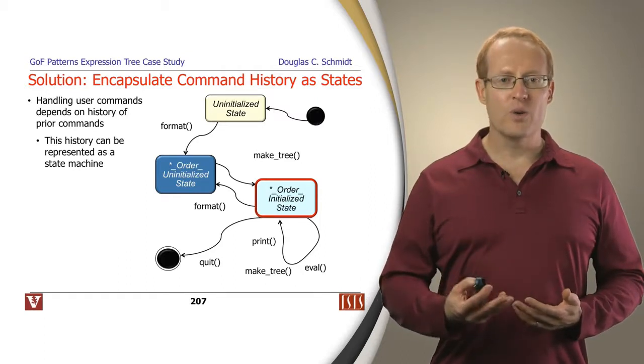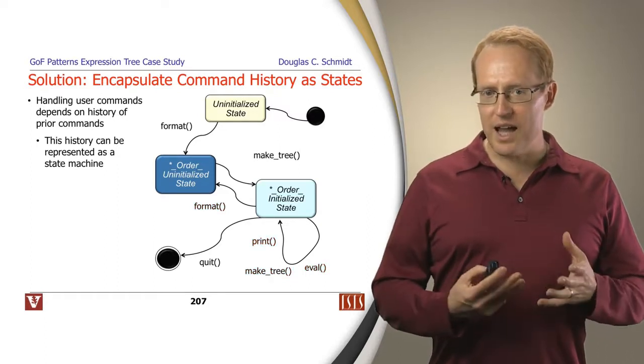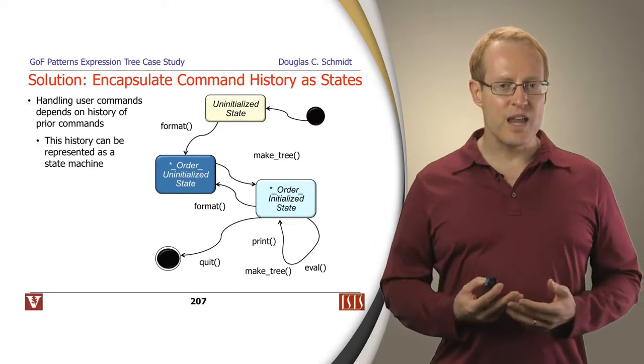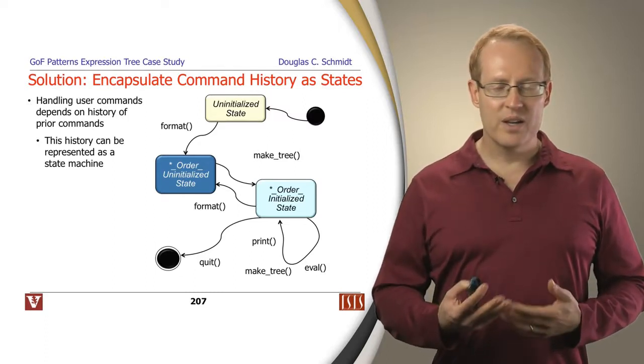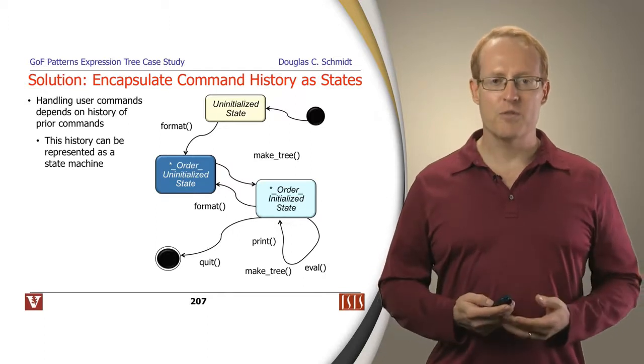This says we've given the appropriate order we want the input to be read. At that point, you can then go ahead and make a tree. And when you make the tree, in other words, when you give it the expression to evaluate, it goes ahead and creates the tree. And then it transitions into the order initialized state. And at that point, you can go ahead and print and eval and make new trees and so on. If you don't see a line with a command on it, then that's considered to be an invalid state.